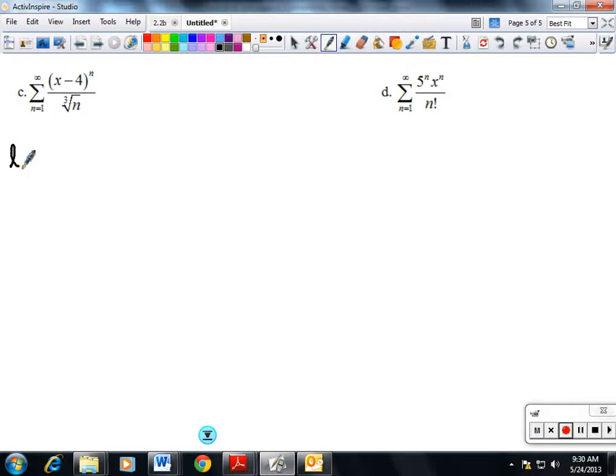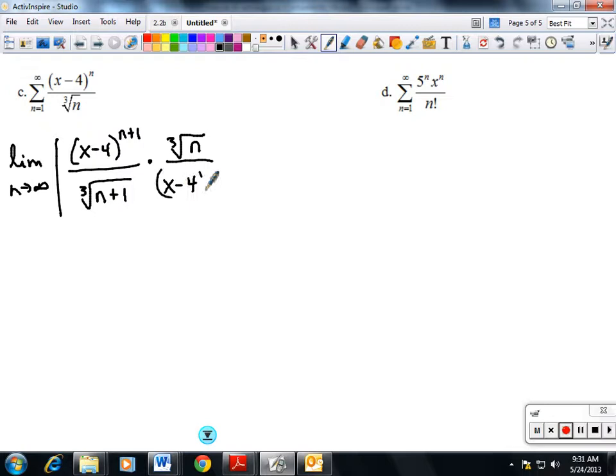Remember, I start out with my ratio test. The limit as n goes to infinity of (x-4)^(n+1) over the cube root of (n+1) times the cube root of n over (x-4)^n.